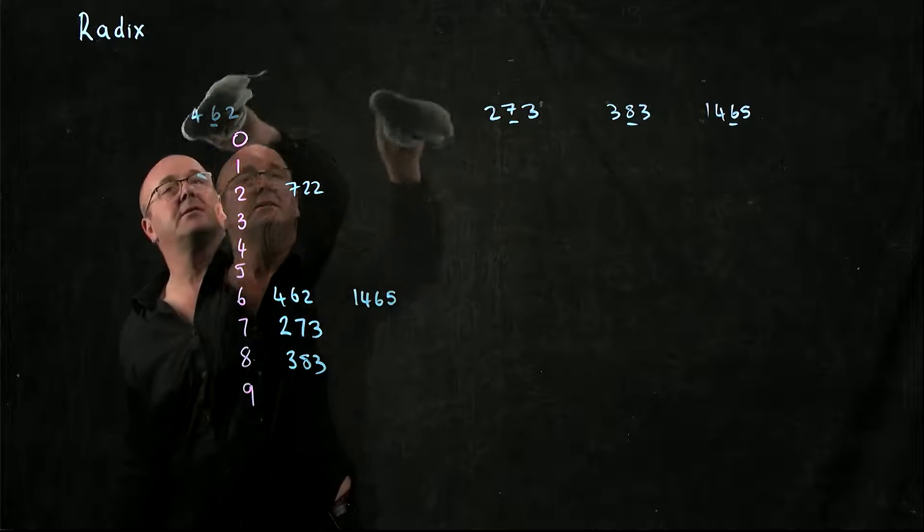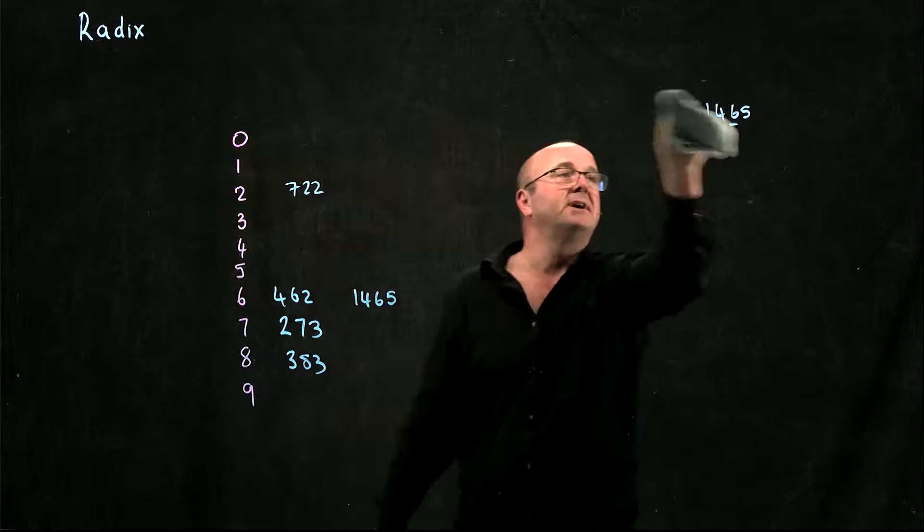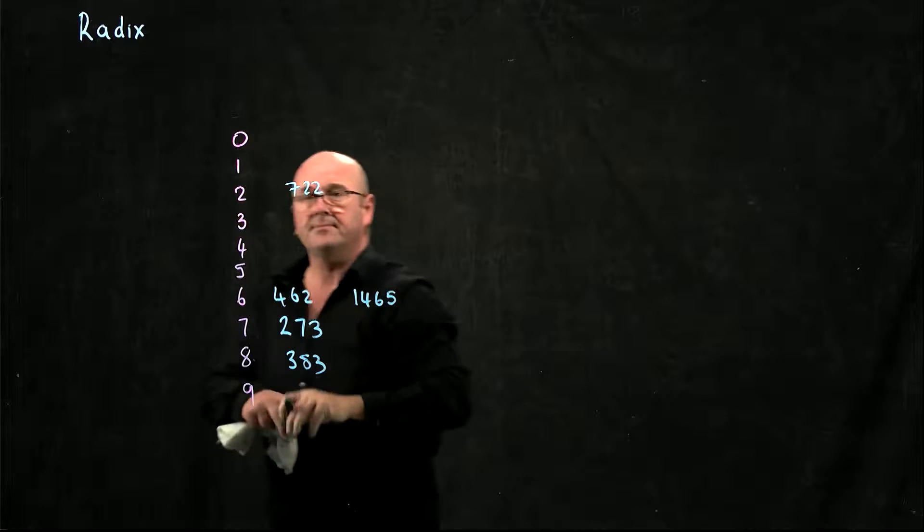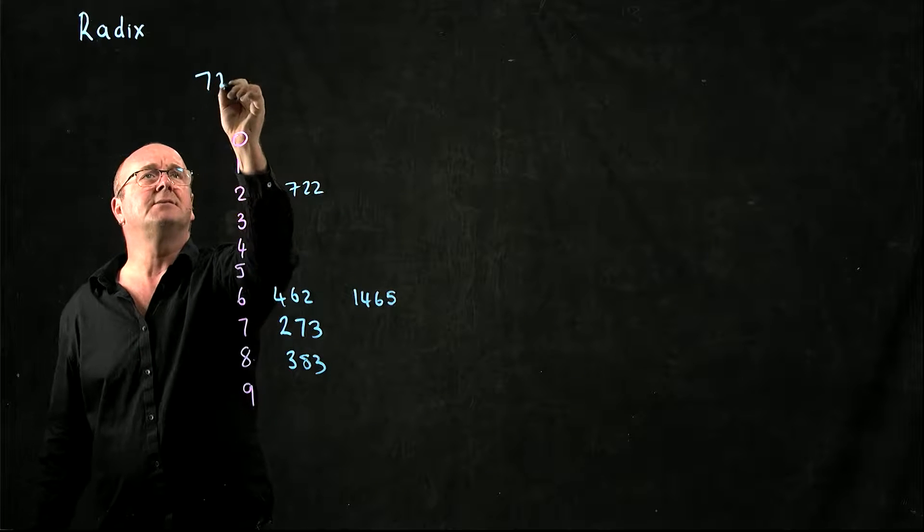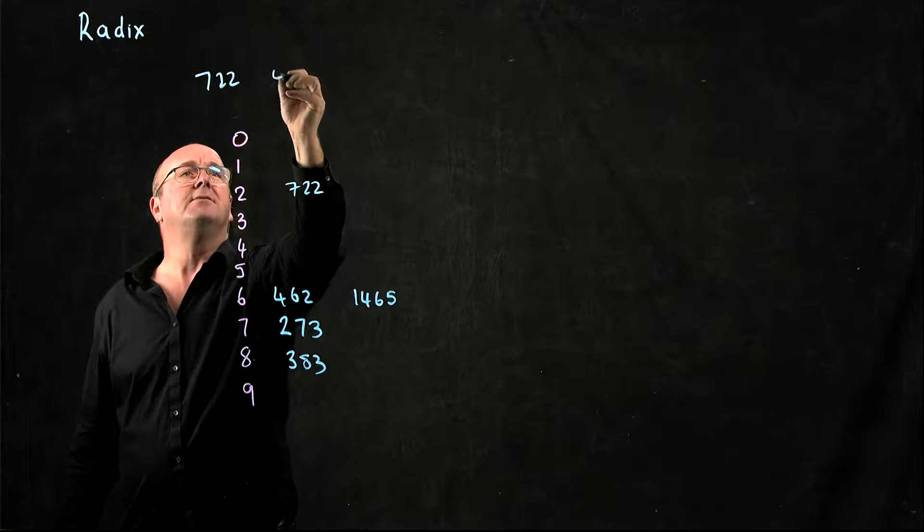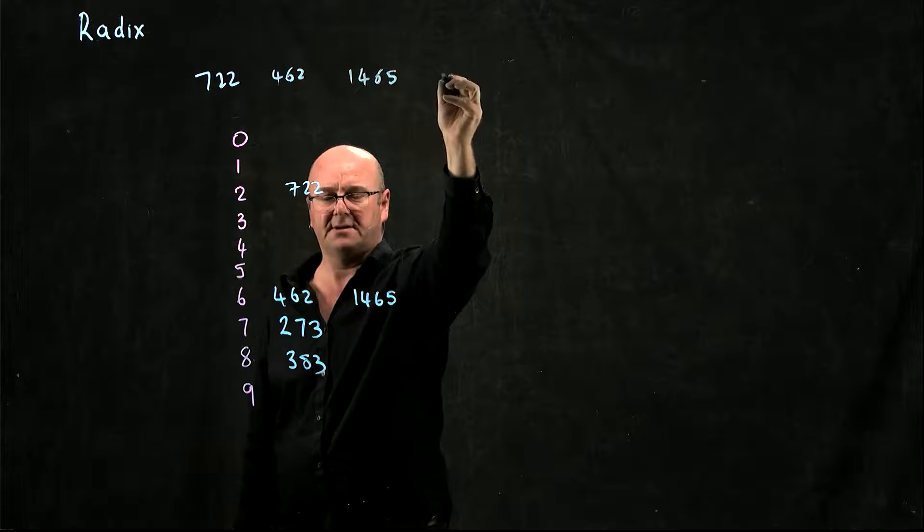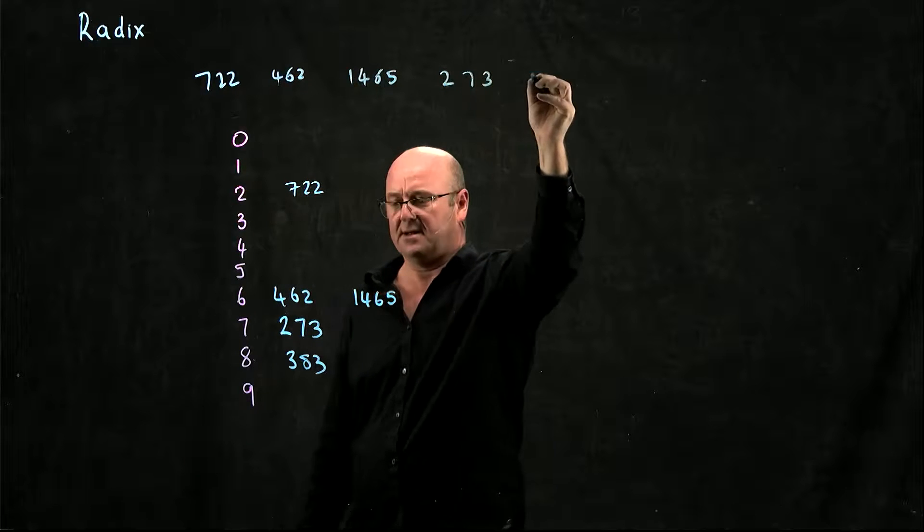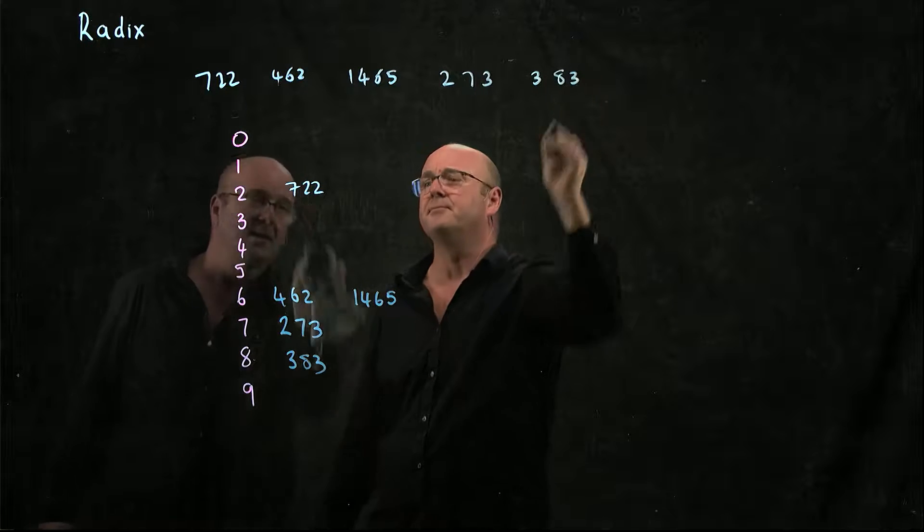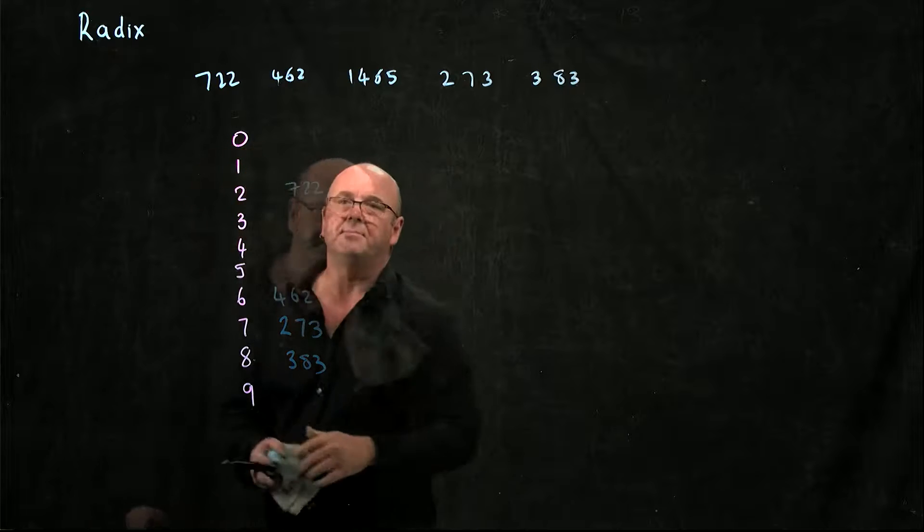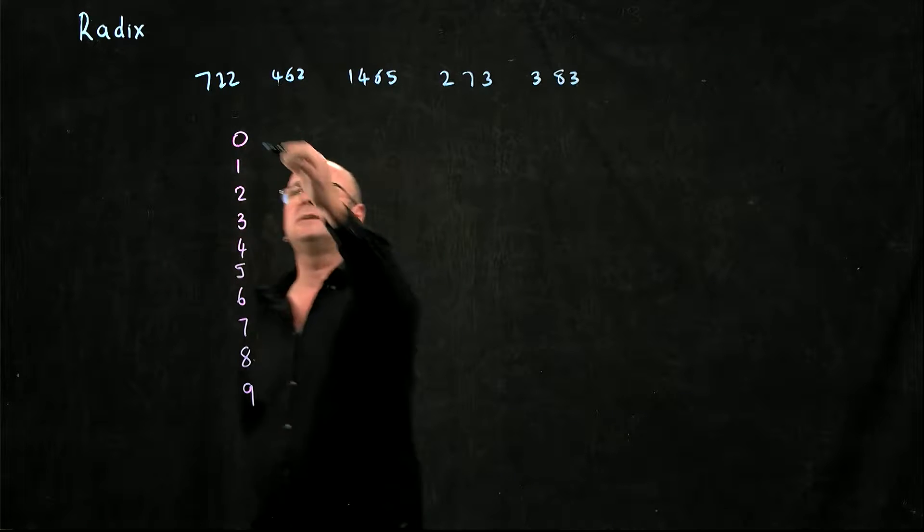I rewrite my list based on this sorting. So now it's 722, 462, 1465, 273, and 383. Now I've sorted it by the tens bin and by the hundreds bin.